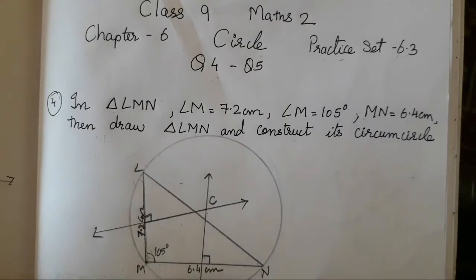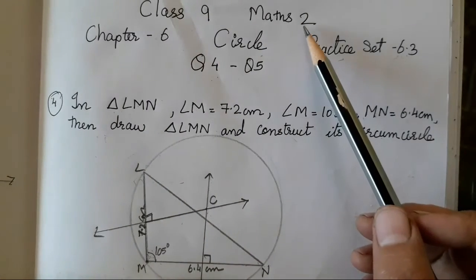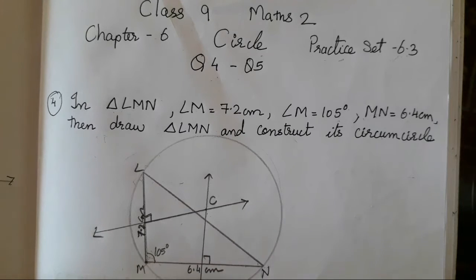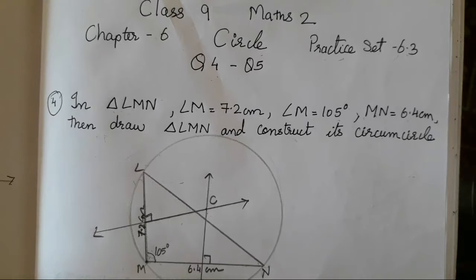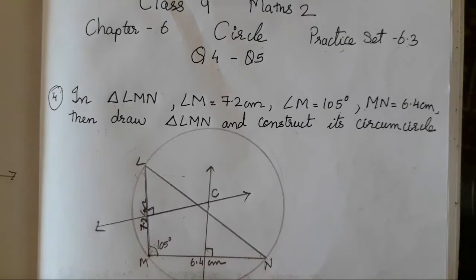Hello everyone, today we are going to do Class 9 Maths Part 2, Chapter 6, that is Circles, Practice Set 6.3 — questions 4 and 5 we are going to complete in today's video. The other questions from this exercise have already been completed; the link will be provided in the description box, you all can check before starting with this question.